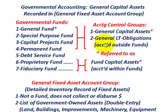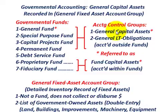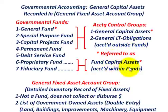When we refer to those capital assets in the accounting control group, they're general capital assets accounted for outside the funds. When they're accounted for within the funds — for the proprietary fund and the fiduciary fund — they're referred to as fund capital assets.